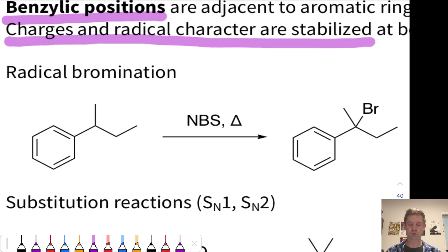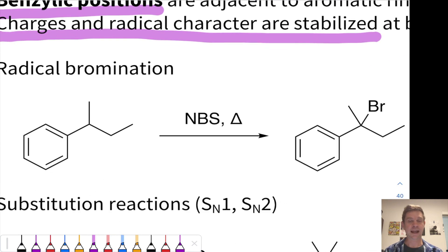For example, radical bromination. If we treat a compound like this with N-bromosuccinimide, which is a source of bromine radicals, we get selective bromination at this benzylic position.